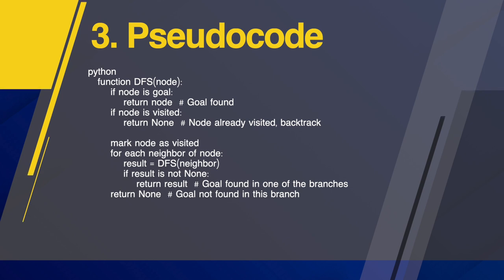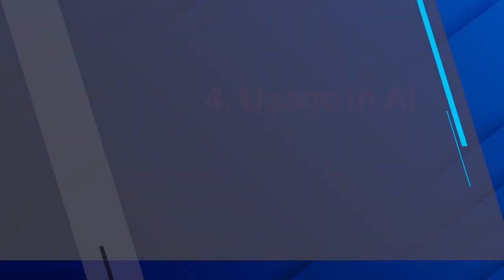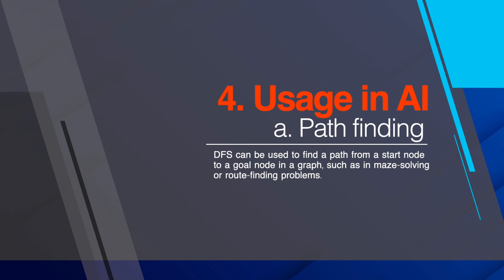Here is the pseudocode written in Python style: define function DFS(node) — if node is goal, return node (goal found); if node is visited, return node (node already visited, backtrack); mark node as visited; for each neighbor of node, result = DFS(neighbor); if result is not None, return result (goal found in one of the branches); return None (goal not found in this branch).